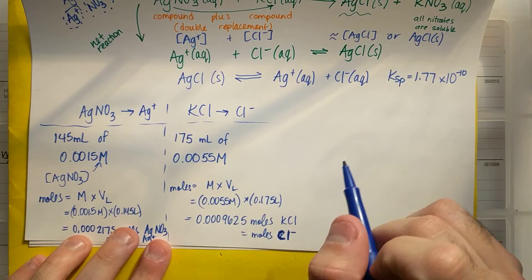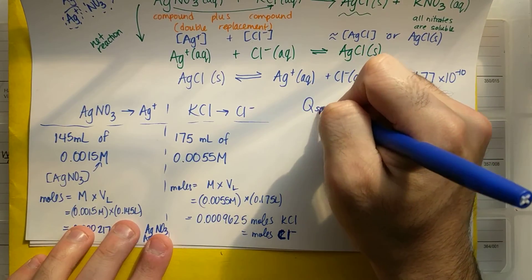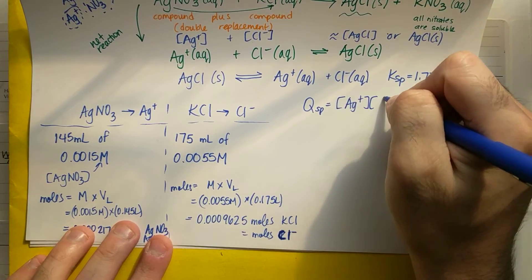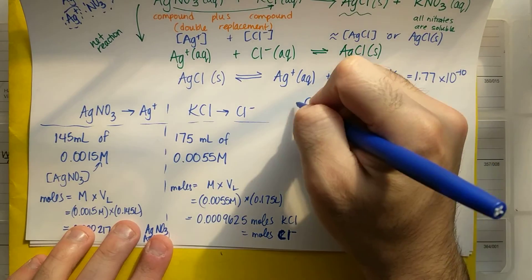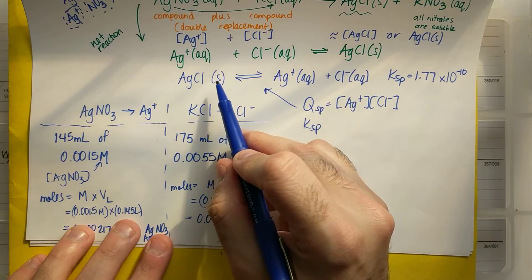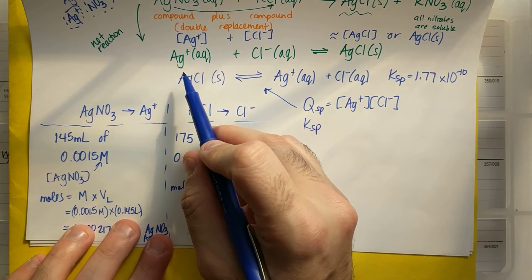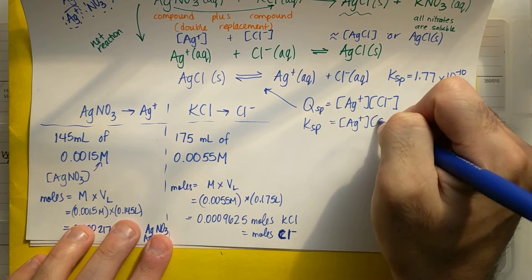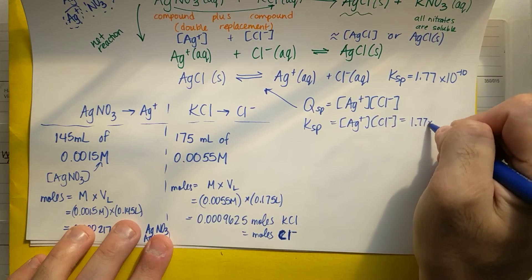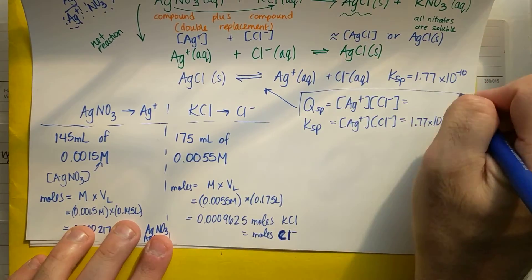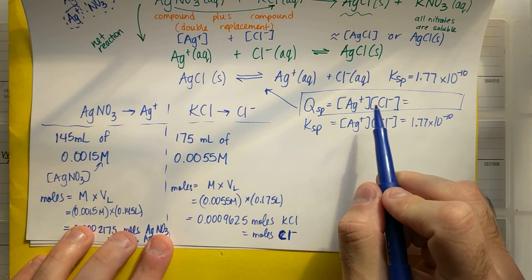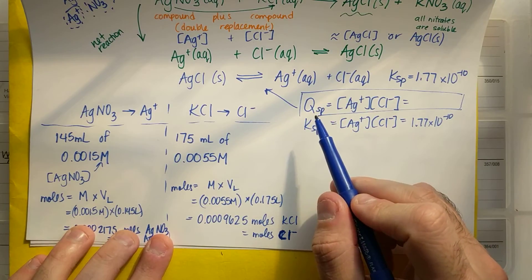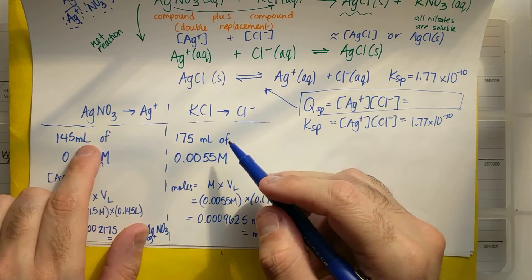If I want to figure out a Q, QSP is equal to the concentration of Ag plus times Cl minus. Because KSP, just like from this equation, remember we don't include solids in the chemical reaction. So it's products over no reactant, which is just one. So KSP is the same thing, Ag plus, Cl minus concentration. And we already know that value. We're trying to find Q here. So I will need the concentrations of both these ions multiplied times each other to get my Q. And I'm gonna compare it to K.